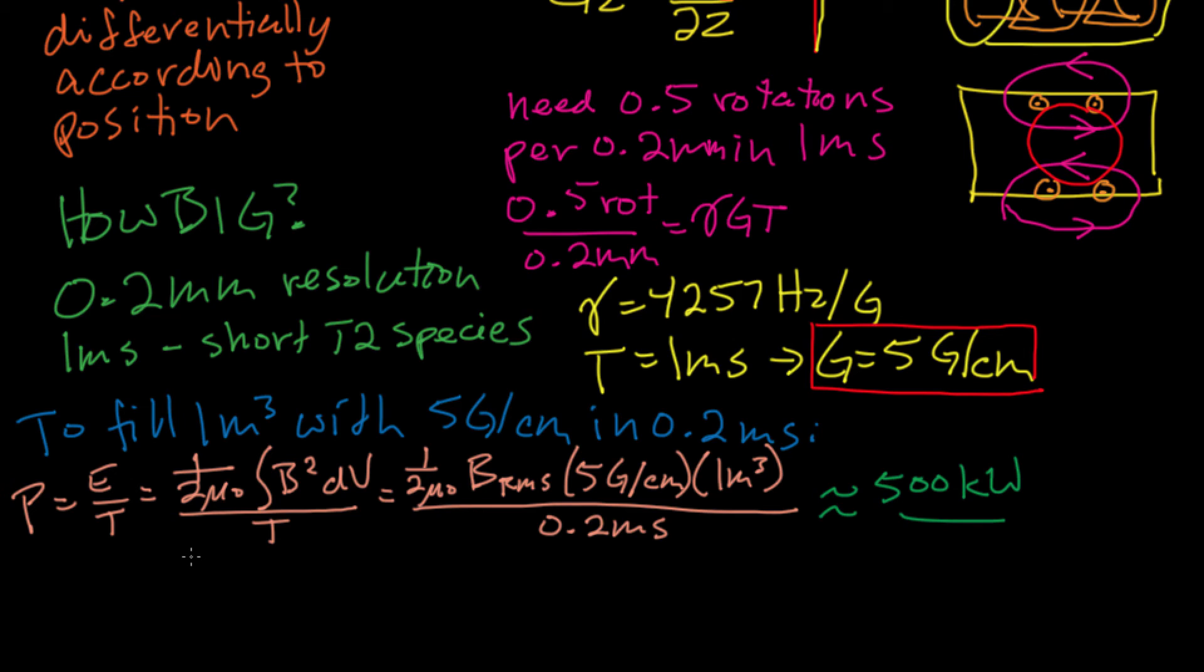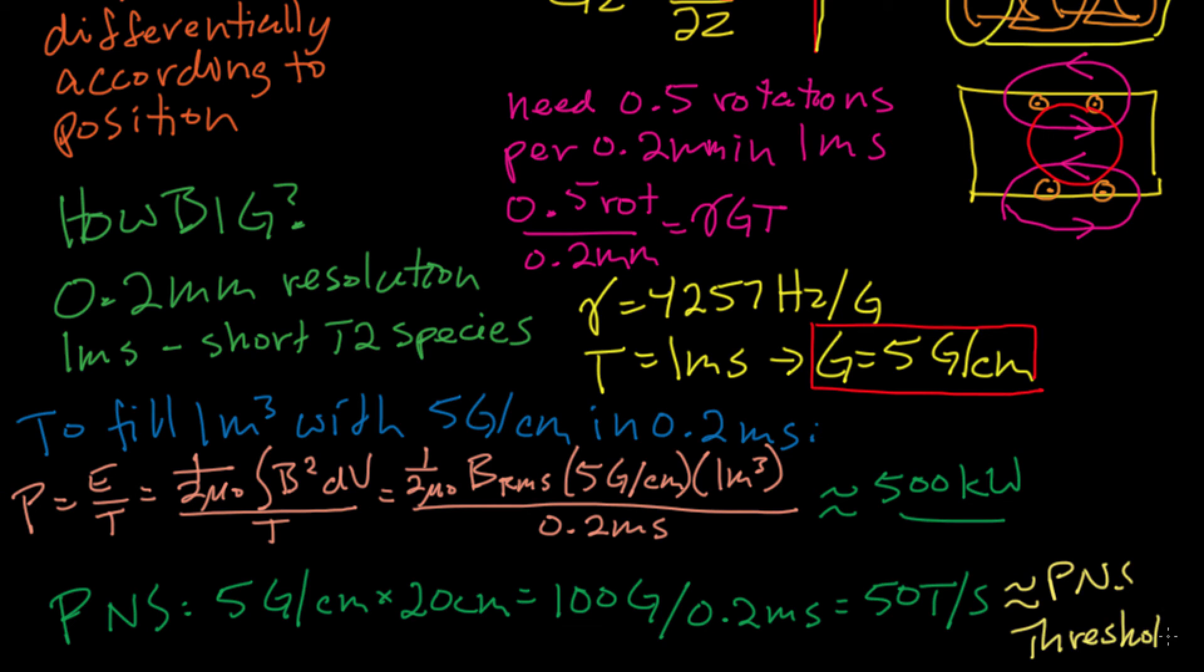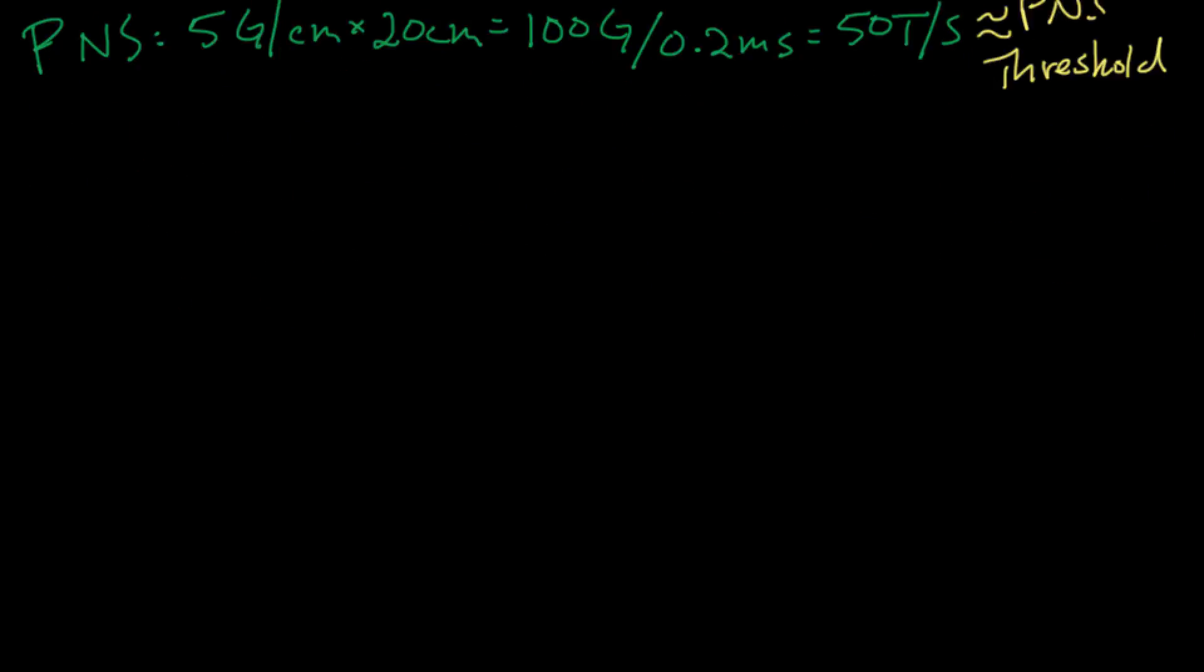Now interestingly, there's another more physiological limitation on how fast you can switch gradients. Rapidly switched magnetic fields induce EMFs, and those EMFs can create currents in the body, and those currents can generate peripheral nerve stimulation, which can cause tingling sensations and twitching. So that's not good. So if you've got a 5 gauss per centimeter gradient, at the edges of the body, which are about 20 centimeters away, you have about 100 gauss of magnetic field. If you're generating that in 0.2 milliseconds, the magnetic field slew rate's about 50 tesla per second. And it turns out that physiologically, that 50 tesla per second is right around the threshold for peripheral nerve stimulation. So it just happens that peripheral nerve stimulation sets thresholds that are just about the same as the current engineering limits.